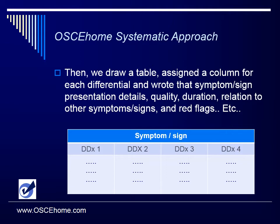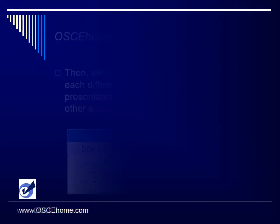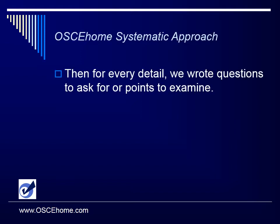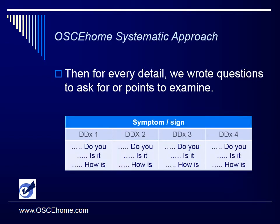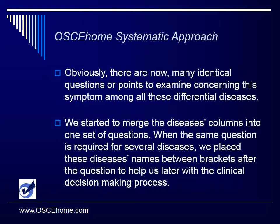So we have a table like that with disease number 1, 2, 3, 4, and all the details of that specific symptom for that disease. Then for every detail, we wrote a question to ask or a point to examine. So the table looks like that now — you have diseases with the questions. Obviously, there are now many identical questions and points to examine concerning this specific symptom or sign among all these differential diseases.